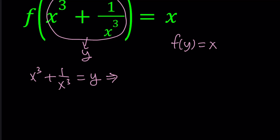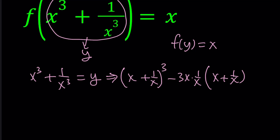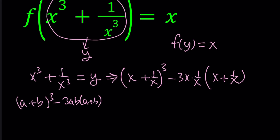We can use an identity that we use very often in these kinds of problems. The sum of two cubes can be written as x plus 1 over x, all cubed, minus 3 times x times 1 over x times x plus 1 over x. The identity is: a plus b cubed minus 3ab times a plus b equals a cubed plus b cubed. And when you expand, you'll realize that's true.